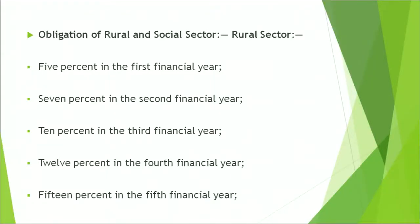Let us understand the obligation of rural and social sector. The rural sector refers to backward areas and the social sector refers to various projects related to medical or health of the public or education. There are certain norms laid down with respect to how much should be the business procurement or investment into these projects. It is 5% in the first financial year, 7% in the second financial year, 10% in the third financial year, 12% in the fourth financial year, and 15% in the fifth financial year.